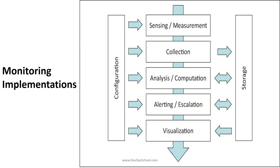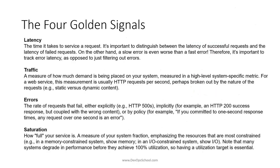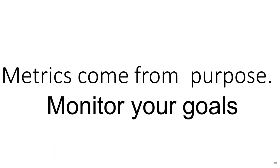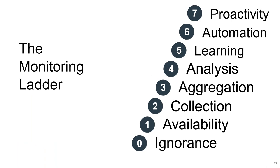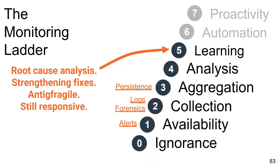How to implement monitoring: the phases are measure, collect, analyze, store, alert, and visualize. There is also the monitoring ladder — when implementing monitoring you go through proactivity, automation, learning analysis, aggregation collection, availability, and ignorance. These are some practices to follow.